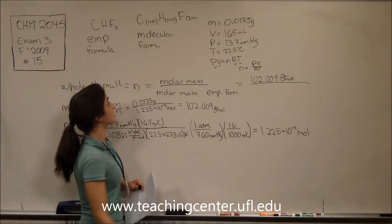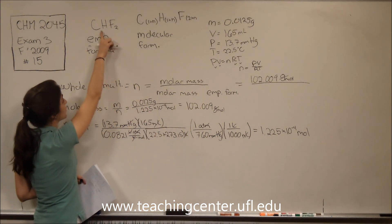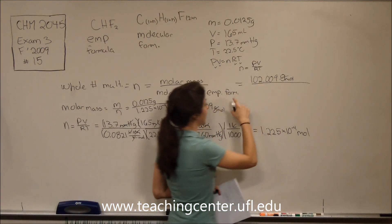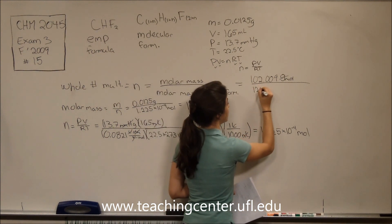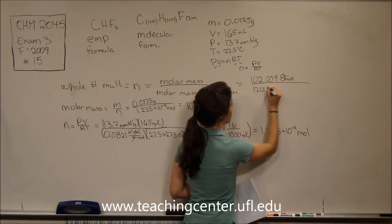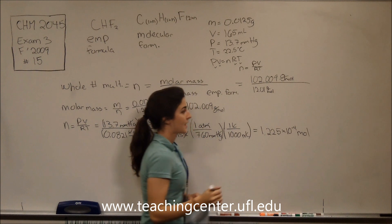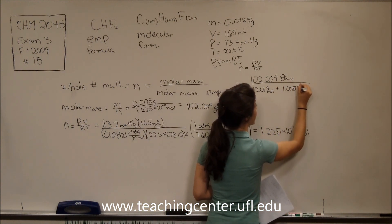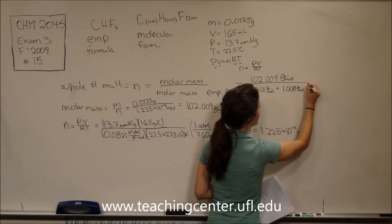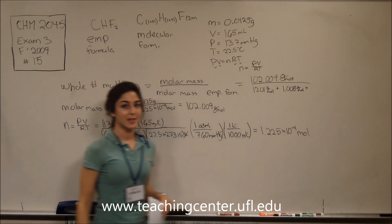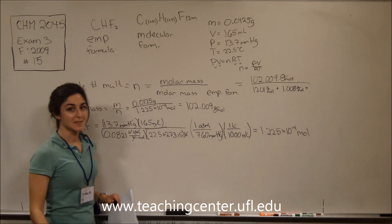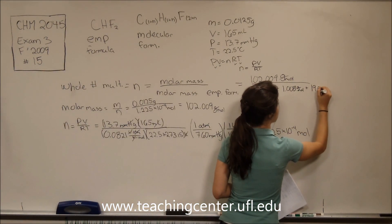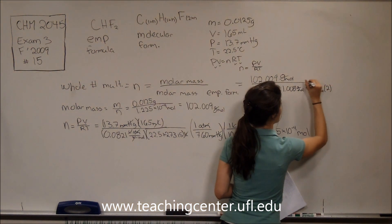Now this part will be easy because all we have to do is add the molar masses of each atom that's in the empirical formula. So carbon will give us 12.01 grams per mole, hydrogen will give us 1.008 grams per mole, but fluorine is going to give us 19.00 grams per mole times 2.